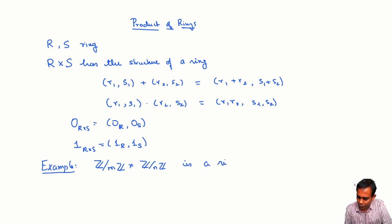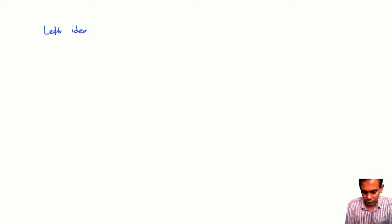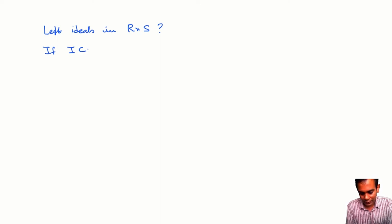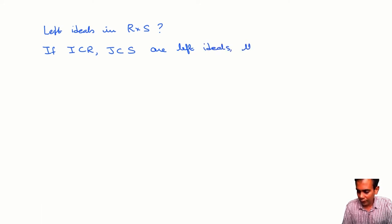Suppose R and S are two rings, not necessarily commutative. We can form the ring R×S, and now I ask: what are the left ideals in R×S? Here's one easy way of constructing a left ideal in R×S: if I is a left ideal in R and J is a left ideal in S, then I×J is a left ideal in R×S.